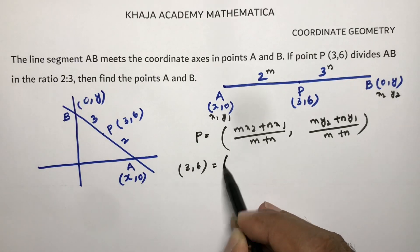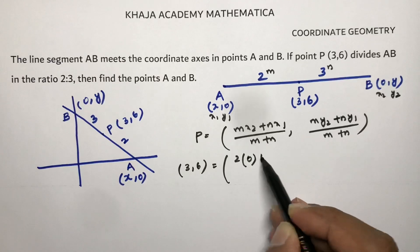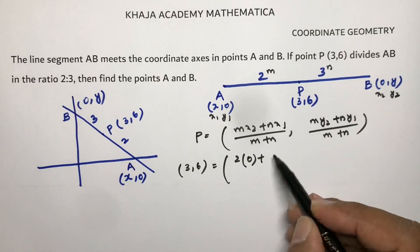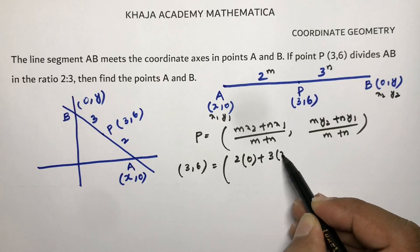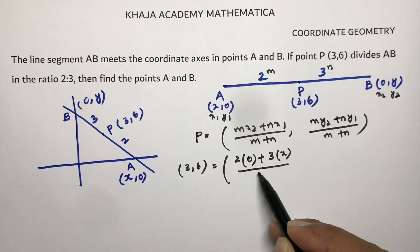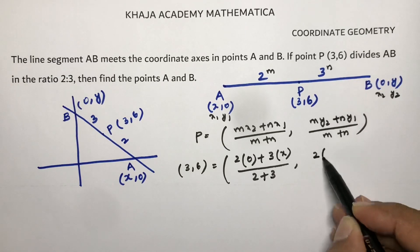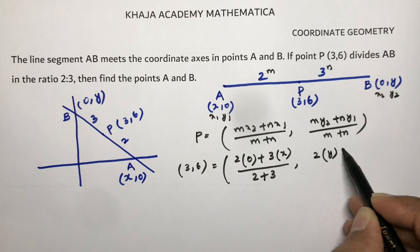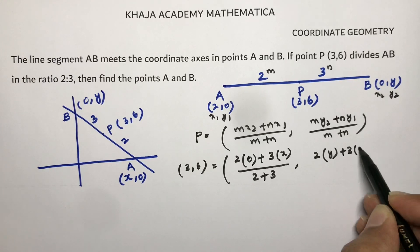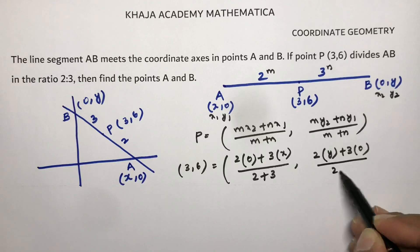m is 2, x2 is 0, n is 3, x1 is x, divided by 2 plus 3. And here, 2 times y2 which is y, plus 3 times y1 which is 0, divided by 2 plus 3.